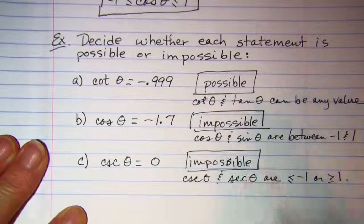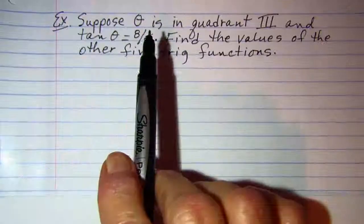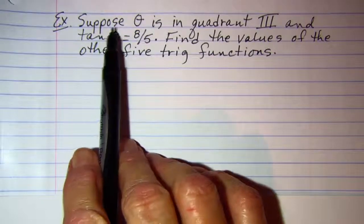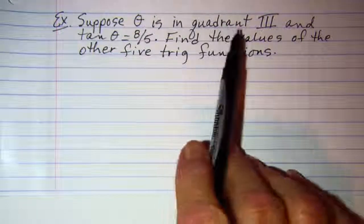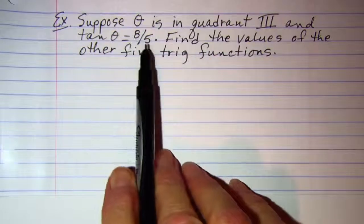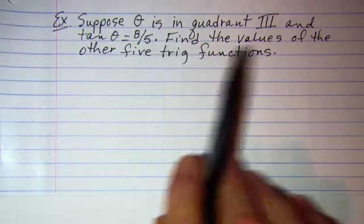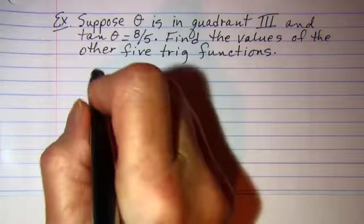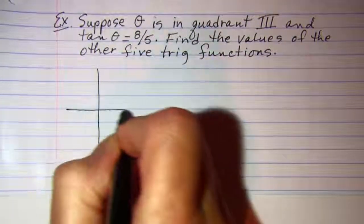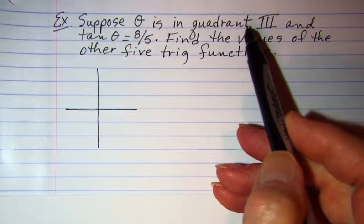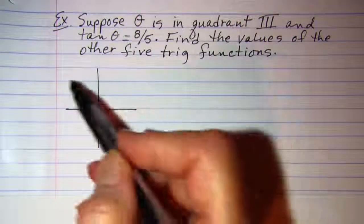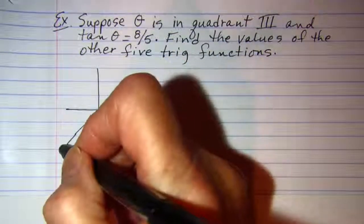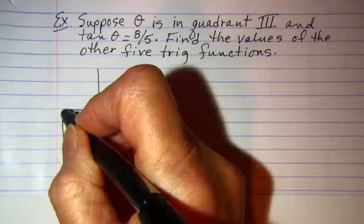The next problem says that theta is in quadrant three and the tangent of theta is eight over five. Find the values of the other five trig functions. So let's draw a sketch. Theta is in quadrant 3. Our vector is in quadrant 3. Let's draw the reference triangle.